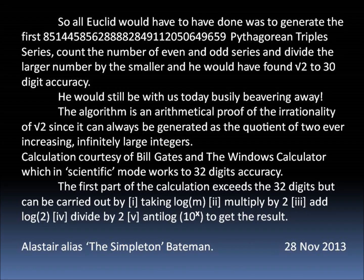So all Euclid would have to have done was to generate the first 851,445-odd Pythagorean triple series, count the number of even and odd series, and divide the large number by the smaller, and he would have found root 2 to, in my case, 30-digit accuracy.